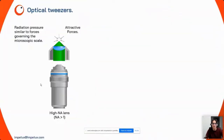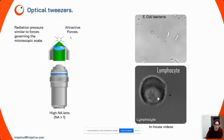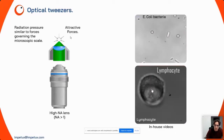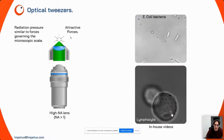An optical tweezers, or optical trap, is a laser beam of light focalized with an objective. At the focus, the radiation pressure of light can exert forces similar to those governing the microscopic scale. If you use high numerical aperture lenses, these forces become attractive and you have an optical trap, allowing you to trap and manipulate microscopic objects. In this example taken with our system, you can see E. coli bacteria being oriented in space using two optical traps per bacterium, and manipulation of a lymphocyte cell.